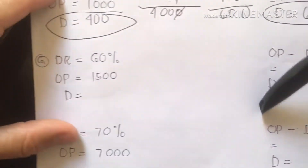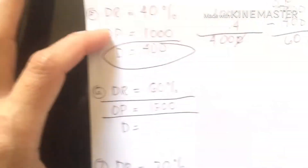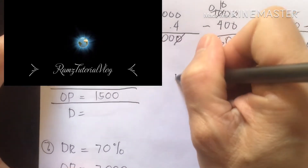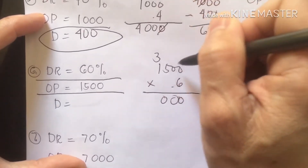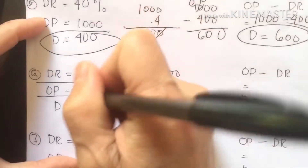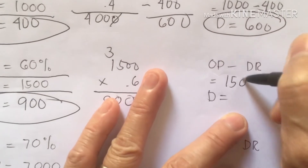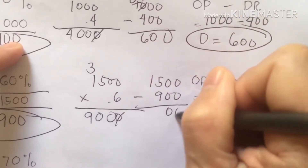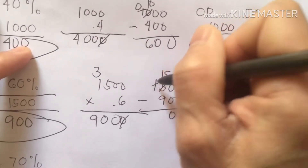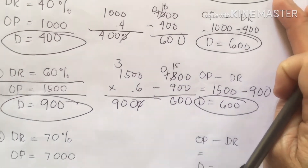Number 6: our discount rate is 60% and our original price is 1,500. We solve 1,500 times 60% — convert to decimal form so your answer is correct. Our discount is 900. Then we subtract the original price: 1,500 minus 900. 5 becomes 15, 1 becomes 0. Our payable amount is 600 pesos. Amazing!